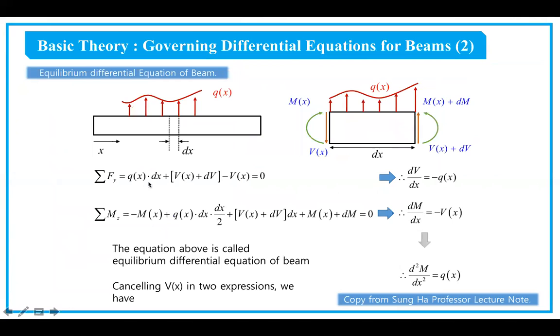When we add everything up, we get two equations: dV/dx equals negative q(x) and dM/dx equals V(x). By combining these two equations and canceling V(x), we obtain the second derivative of M with respect to x squared, which equals q(x).